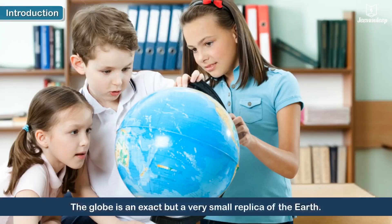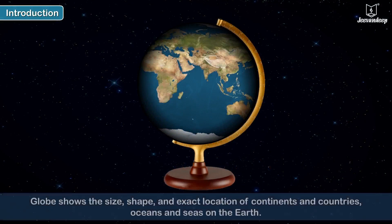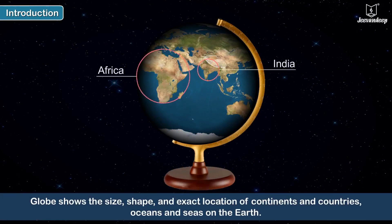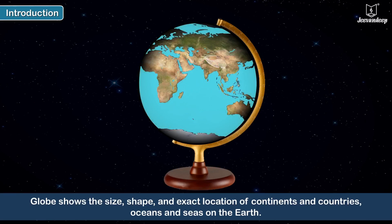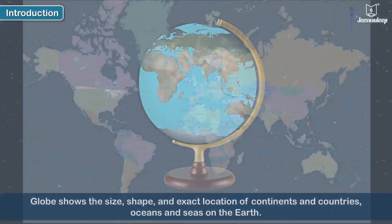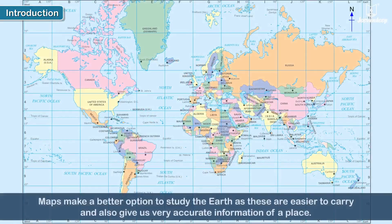The globe is an exact but very small replica of the earth. It shows us the size, shape, and exact location of continents and countries, oceans and seas on the earth. Often maps make a better option to study the earth.